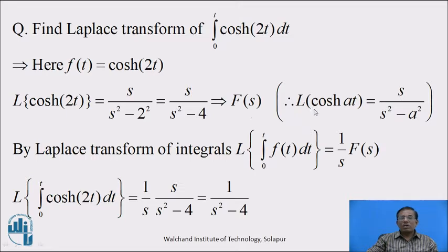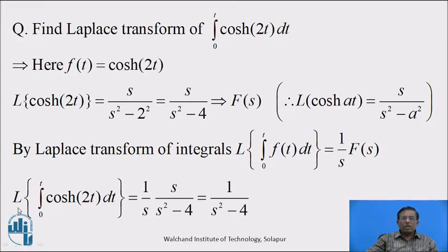By the property of Laplace transform of integrals, Laplace of integration with limit 0 to t of f of t dt equals 1 upon s into F of s. By this property, Laplace transform of integration with limit 0 to t of hyperbolic cos 2t dt equals 1 upon s into s upon s square minus 4. Now s and s get cancelled, and we get the answer 1 upon s square minus 4.